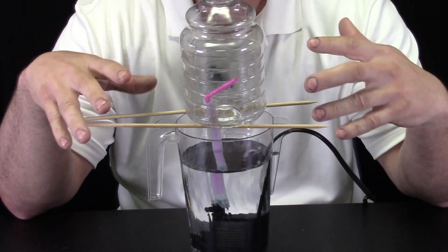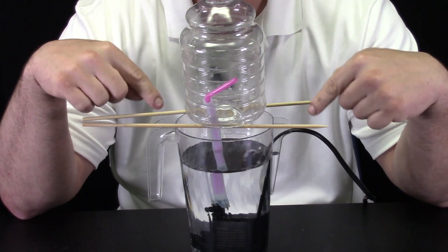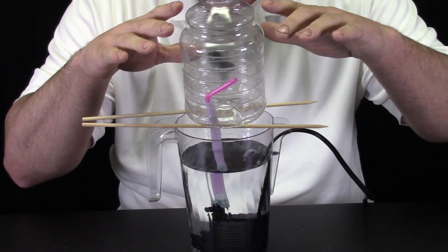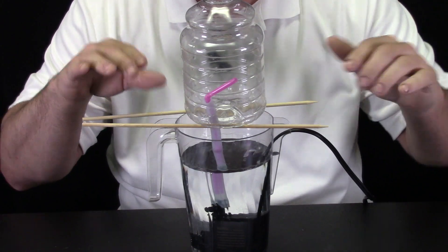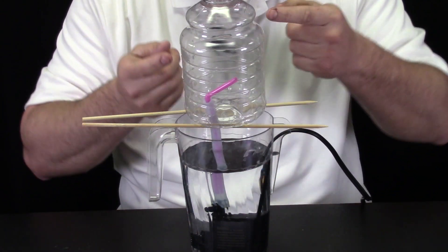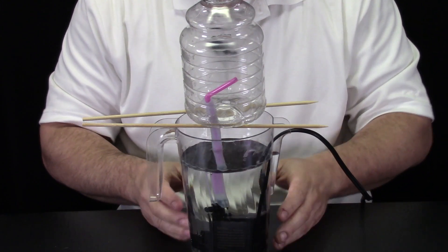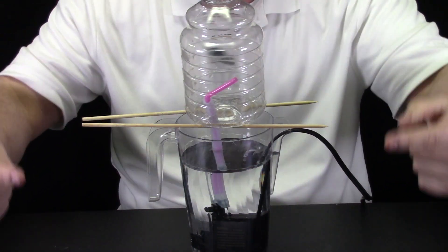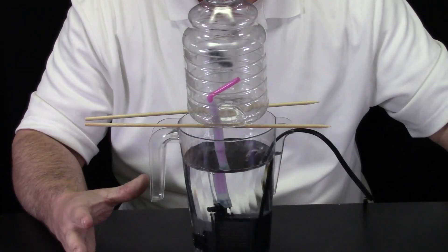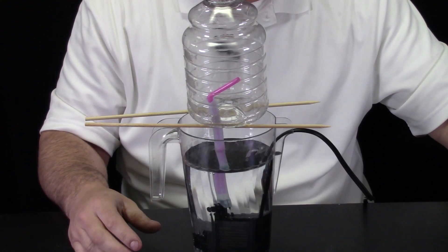So we've zoomed in so you can get a closer look at what's happening once we start the aquarium pump. You can see my bottle's resting on my skewers, and if all goes well the water as it's pumped into the bottle will drain out the center hole back into my pitcher, and I should have a self-sustaining tornado. So let's start the aquarium pump and see if we can get our tornado.